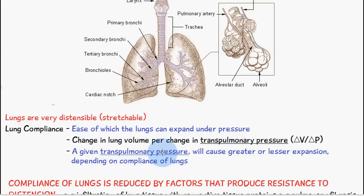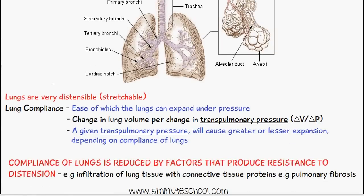Transpulmonary pressure in normal physiological conditions is usually a positive figure. A given transpulmonary pressure will cause greater or lesser expansion depending on the compliance of the lungs — so it's all about how well the lungs can expand under pressure.